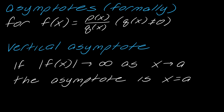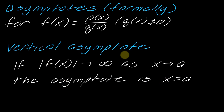Let's say you've got a rational function, which is of the form P(x) over Q(x), where P and Q are both polynomials. The formal mathematical definition of a vertical asymptote is: if the absolute value of F(x) is going to infinity as x approaches A, then the asymptote is x equals A. I'm a math teacher so I've got to tell you the formal definition, but we're going to break down what this means — it has a consequence that's pretty easy to work with.